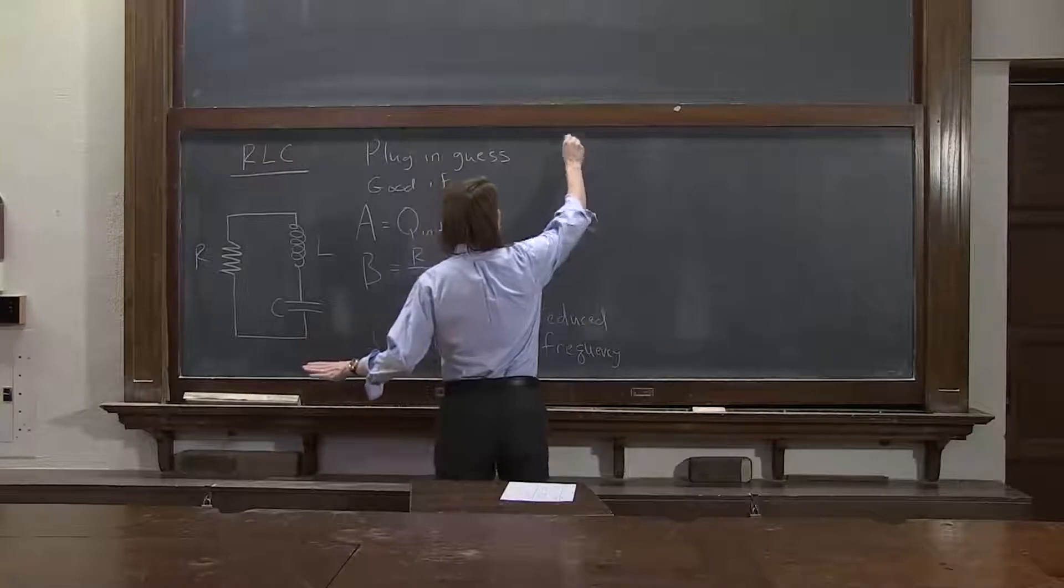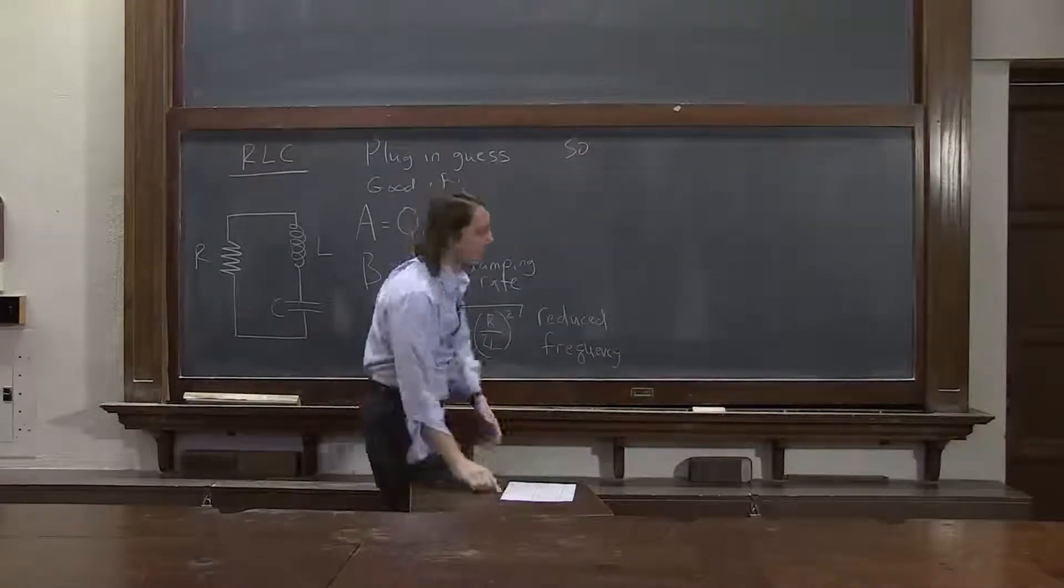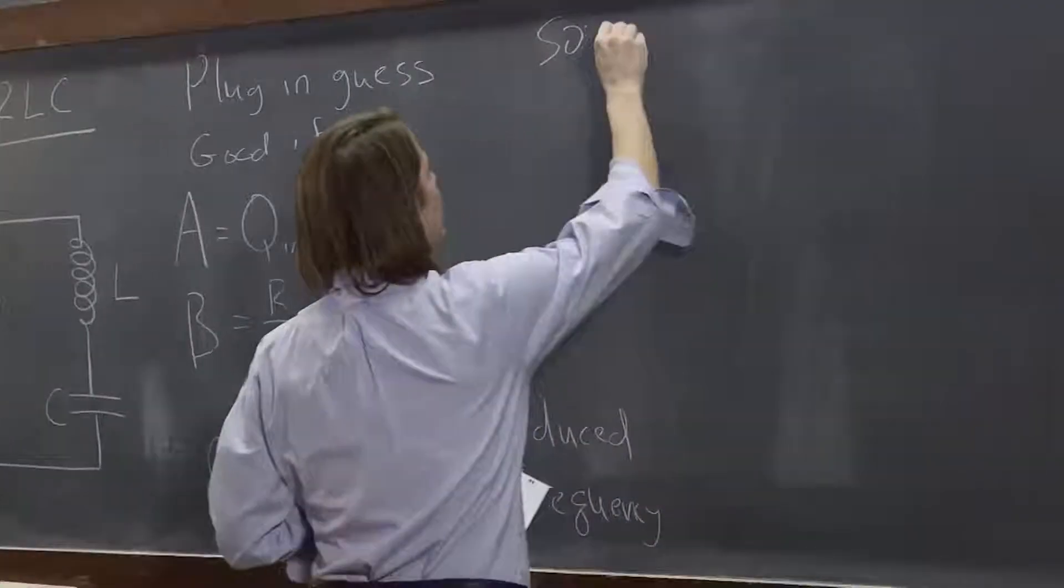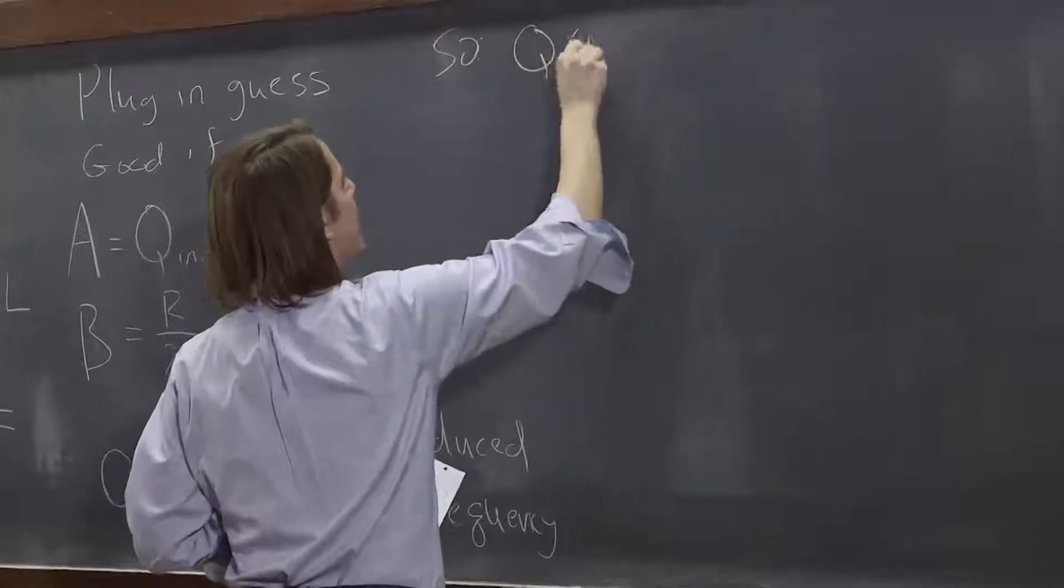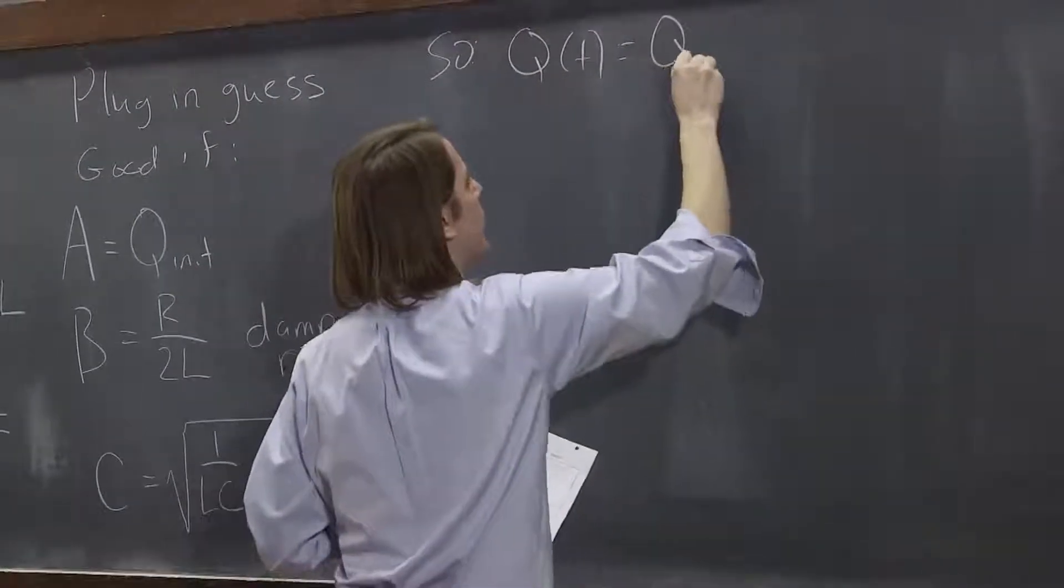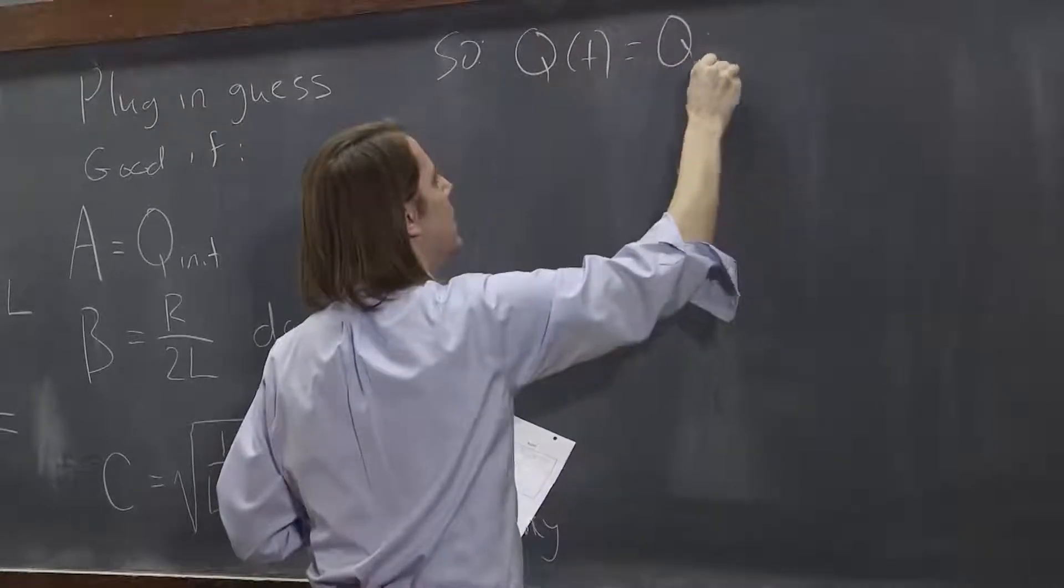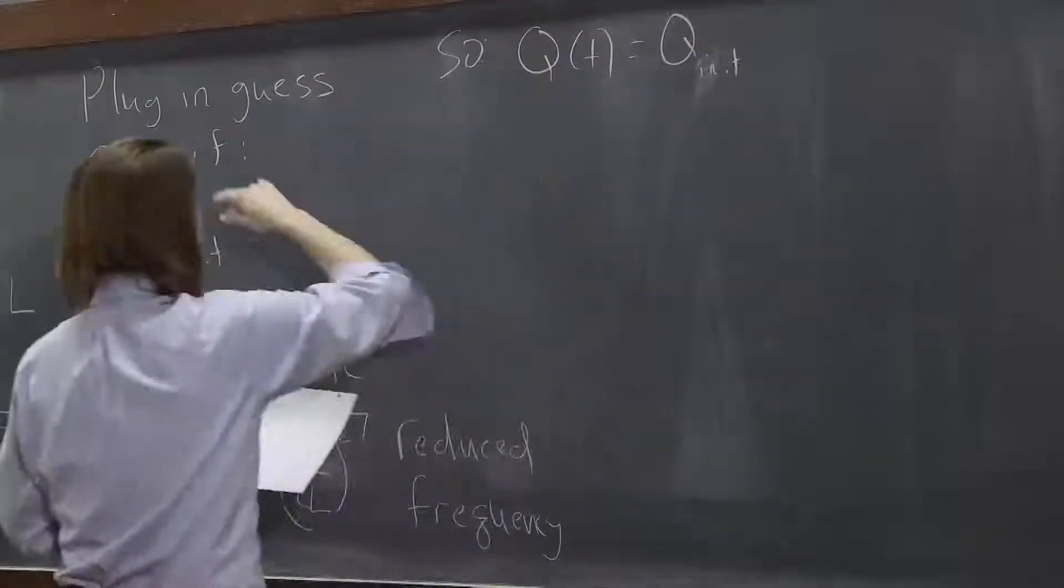Okay. So if we put all that together, it would look something like this. I don't want to mess this up. Q, as a function of time, would be Q max, or Q init is what I call it.